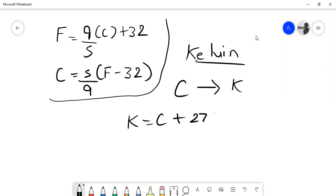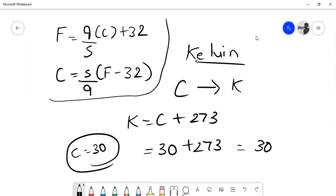So for example, I assume C as 30, right? I assume that C value of 30. Add 273, so it will be 303, right?